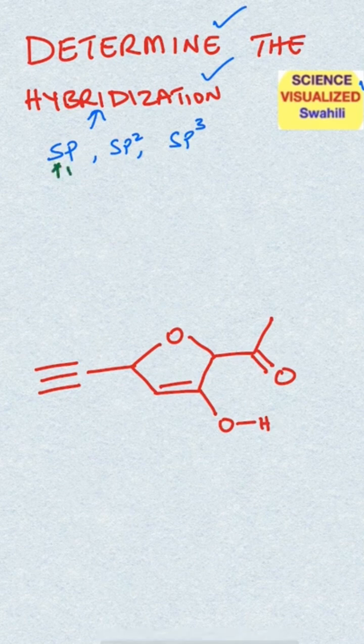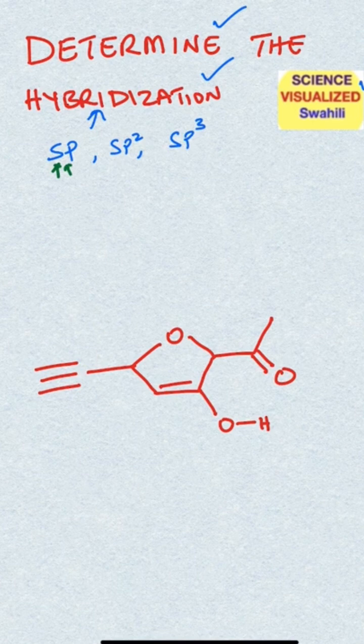For example, sp will involve mixing of s and p orbitals, so it has 50% s character and 50% p character.